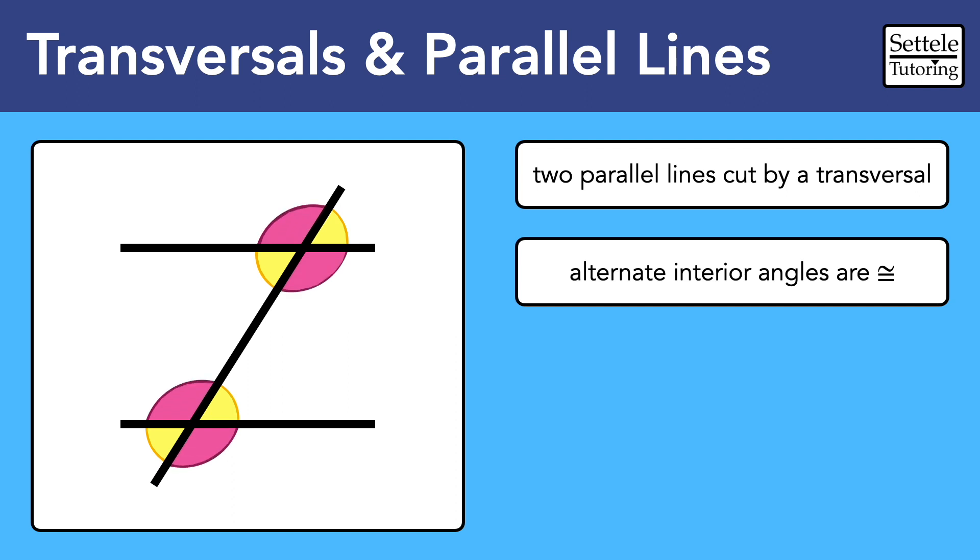The remaining angles form linear pairs and are supplementary to the angles that we know. In other words, they add up to 180 degrees.